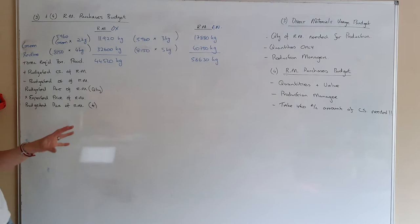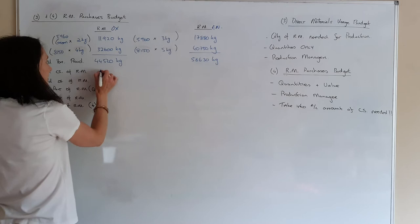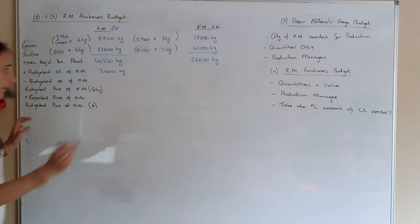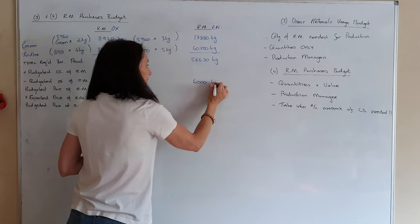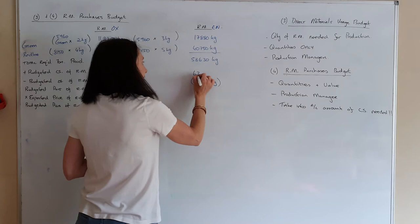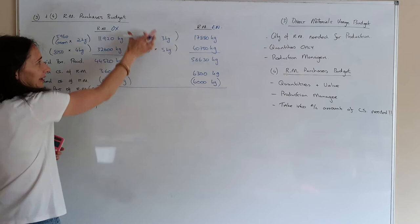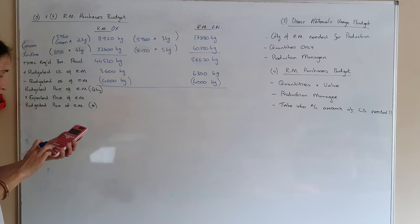We also need to take into account closing stocks. At ordinary level, closing stocks should be given to you. The closing stock for material OX is 3,600 and the opening stock is 4,000. We take away the opening stock because you don't need to buy what you already have. For material EN, the opening stock is 6,000 and the closing stock is 6,300 kilograms.